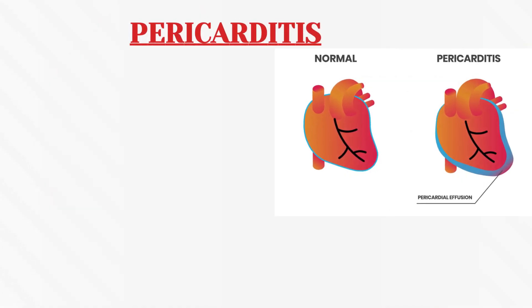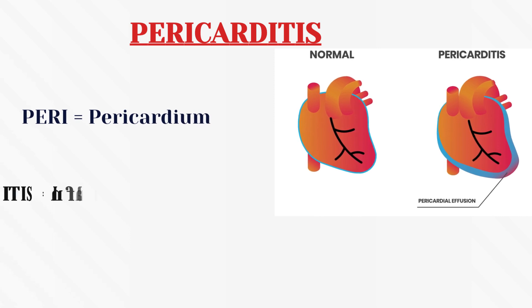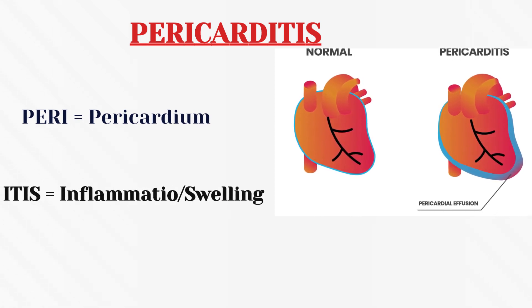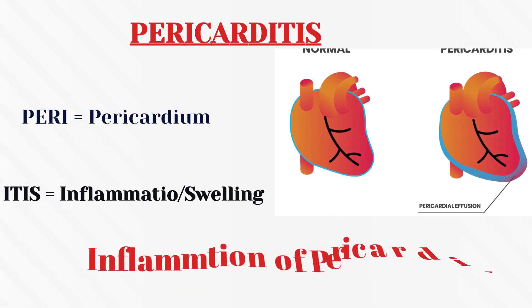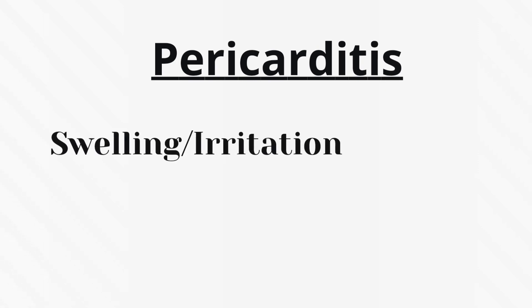Pericarditis is a medical term from 'peri,' which refers to the pericardium, and 'itis,' which means inflammation or swelling. So pericarditis simply means inflammation of the pericardium — in other words, swelling and irritation of the thin sac-like tissue surrounding the heart.